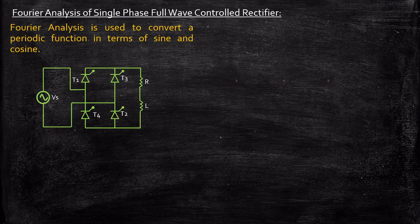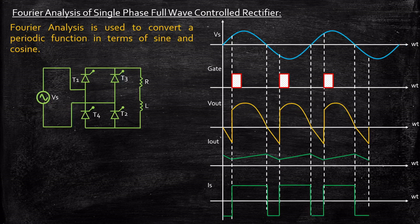Let us consider an RL load with a full wave controlled rectifier circuit. We had previously seen the waveforms. One thing that we did not look at is the source current waveform — we have a periodic square wave. The amplitude for this is I0 and minus I0, and the time period limits are alpha, pi plus alpha, and 2pi plus alpha. So we will be converting this periodic signal to sine and cosine using Fourier analysis.